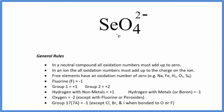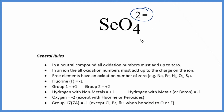In this video, we'll find the oxidation numbers for each element in SeO4 2-. This is the selenate ion. The first thing we want to notice is we have this negative charge up here, 2-. So this is an ion.